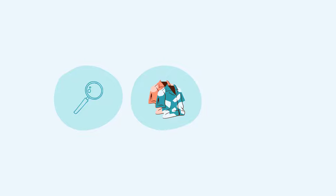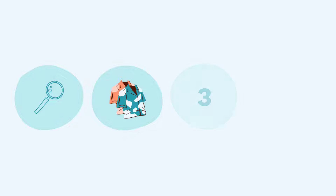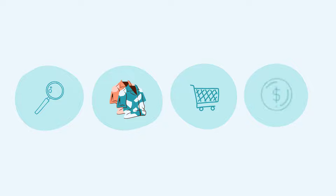Let's say you want to buy a shirt from your favourite online store. The steps you might do are: 1. Search or browse for shirts. 2. Compare the different shirts and decide which one you want to buy. 3. Add the shirt to your cart. And 4. Check out your cart to buy the shirt.